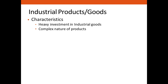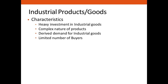The third characteristic is derived demand. The demand for industrial goods is derived and influenced by the demand for the goods they help to manufacture. For example, the demand for a soft drink making plant is determined by the demand for soft drinks. The fourth characteristic is a limited number of buyers — compared to consumer and agricultural goods, the number of buyers of industrial goods is limited, and such buyers are found in certain regions.